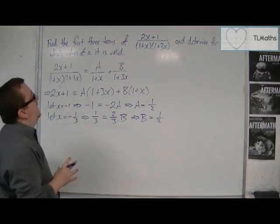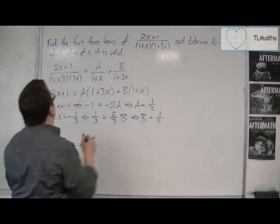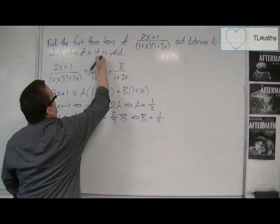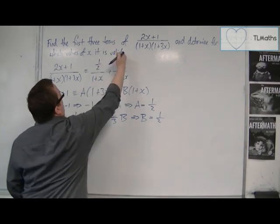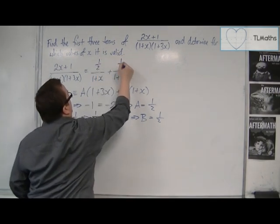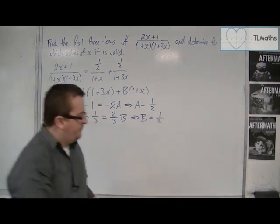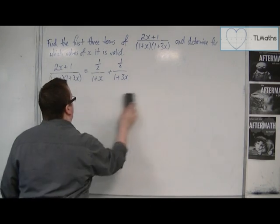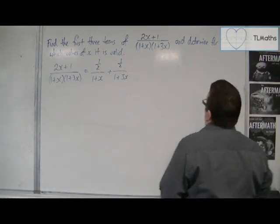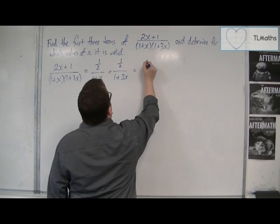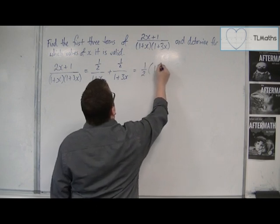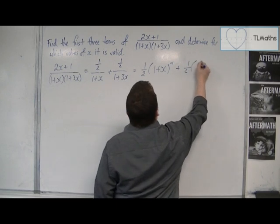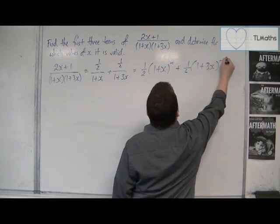So that means that we can split it up into, well, let's save on space. So a is 1 half and b is a half. So that's got to that point there. I can then write that as 1 half of 1 plus x to the minus 1, and a half of 1 plus 3x to the minus 1.